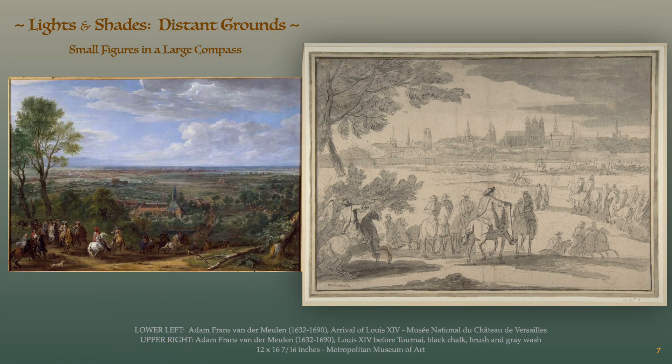In compositions known as small figures within a large compass, darks and lights were employed as distant grounds to give the sense of depth, expansiveness, and a thickness of air effect. Note the three distant grounds in the drawing: the foreground would be the three horse riders and the tree to the left, with darker shadows and more detail in heavier line work. The middle ground consists of more groups of horse and riders, less detailed and lighter in shades. The off-scape or horizon consists of the city against the sky.